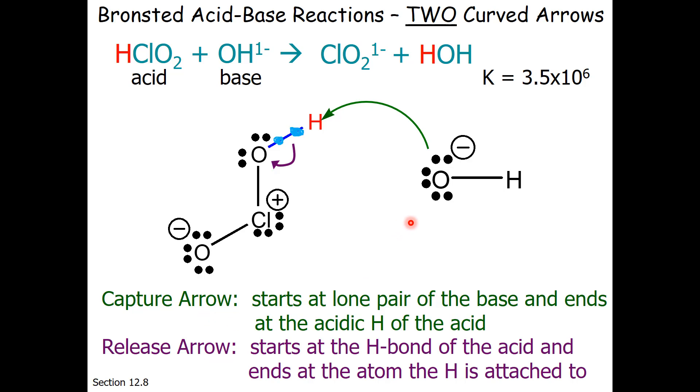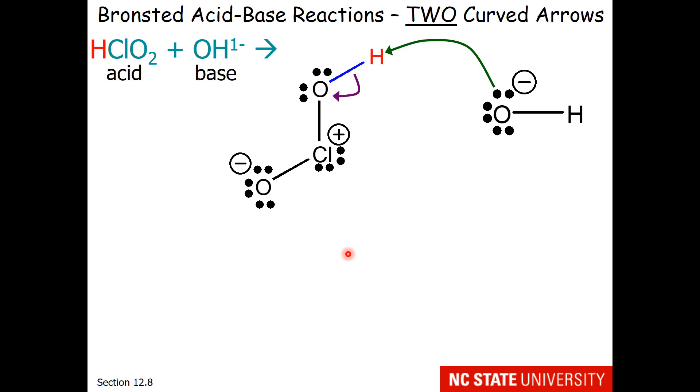Now notice something about the arrows. The arrows always start at electrons and they end at an atom. Either the hydrogen atom or the atom the hydrogen was attached to.